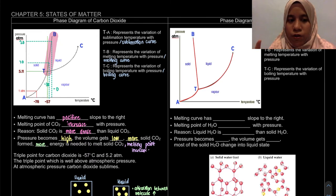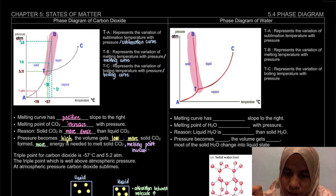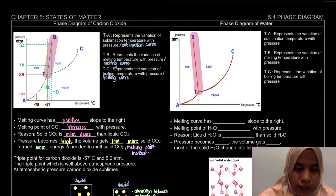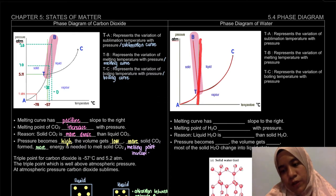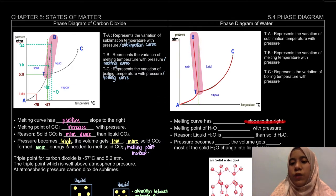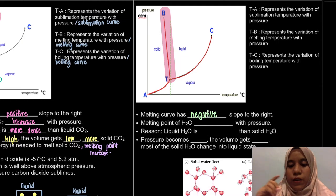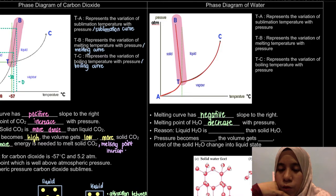Now for the phase diagram of water. The shape is similar, but there is an exception in the melting curve. For water, the melting curve has a negative slope to the left — it's the opposite of CO2. What would happen for water is that the melting point will decrease with pressure.